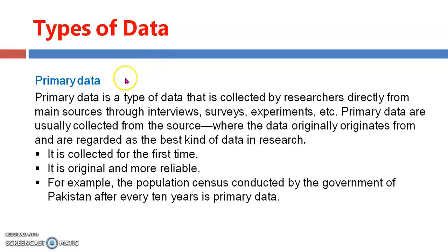Now we talk about the types of data. There are basically two types of data: primary data and secondary data. Primary data is a type of data that is collected by the researcher directly from main sources through interviews, surveys, or experiments. When data has been directly received or collected from its original source, it is called primary data — such as interviews, surveys, and experiments.